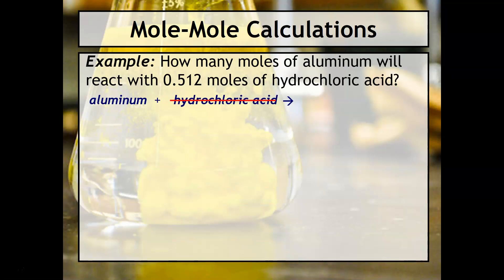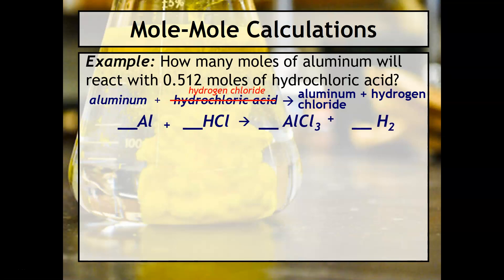This is a single replacement reaction where we have to change the acid name into its ionic name. So that would be hydrogen chloride. And then what we get is aluminum chloride and hydrogen. We then need our balanced formula equation, and it'll look something like that.